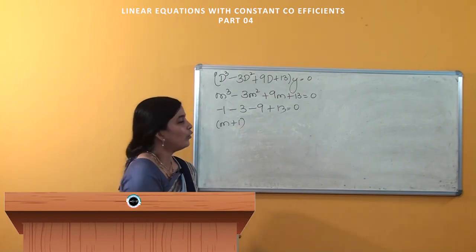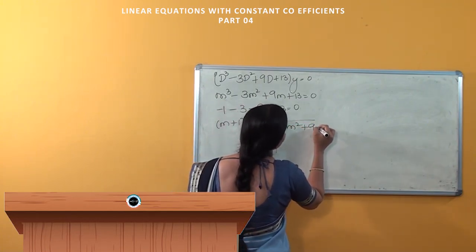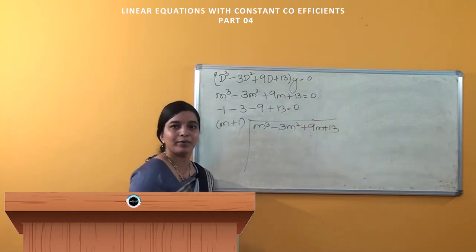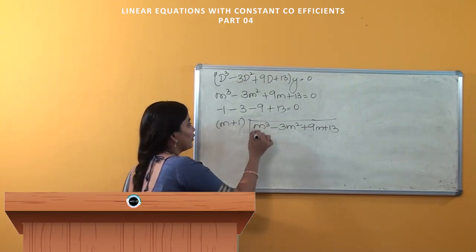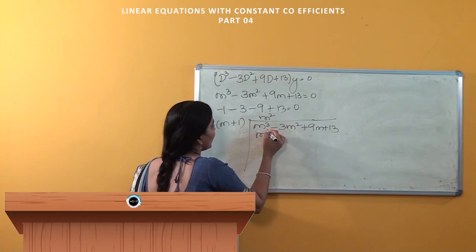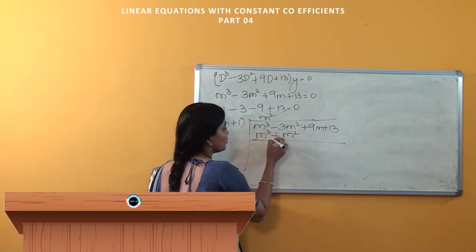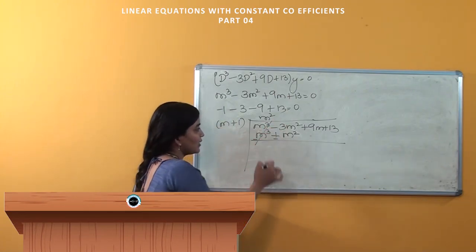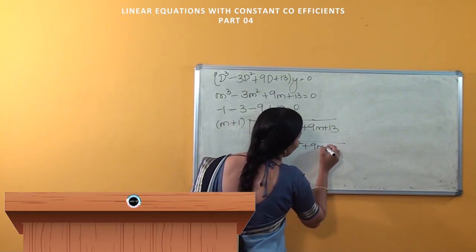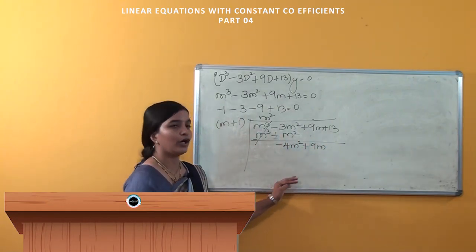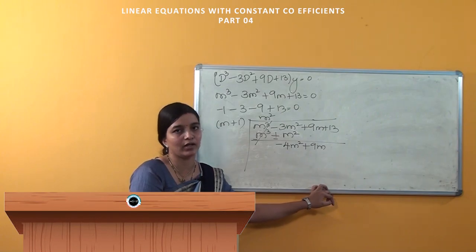To find the next root, divide m³ - 3m² + 9m + 13 by (m + 1). Performing the division, we get m² as the first term: m³ + m², and subtracting gives -4m² + 9m. We continue the division to find the remaining roots of the auxiliary equation, which will be discussed in the next class.